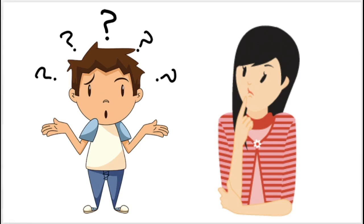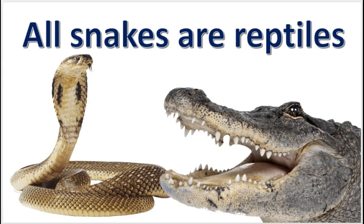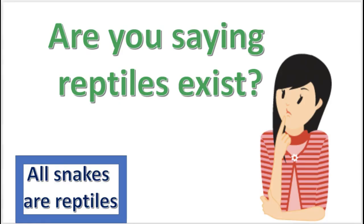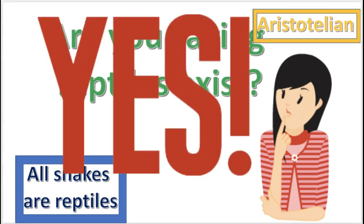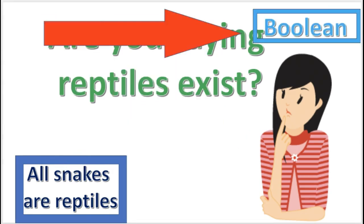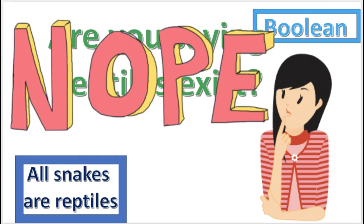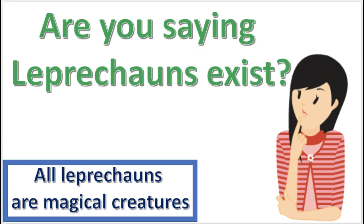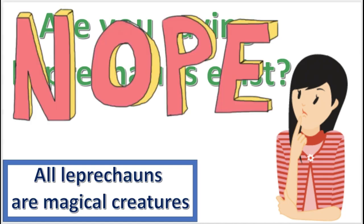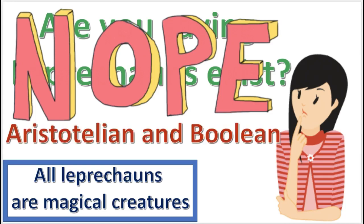What's the difference? Well, how do you interpret this A proposition? Does this proposition imply that there is such a thing as reptiles? According to the Aristotelian interpretation, the answer is yes. But according to the Boolean interpretation, the answer is no. What about this A proposition? Does this proposition imply that there is such a thing as leprechauns? The answer is no, and that's for both interpretations.